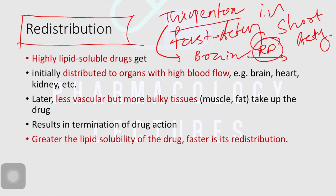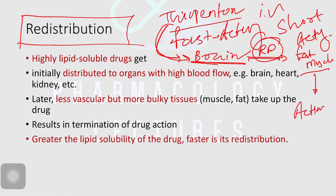It quickly gets redistributed to various tissues — tissues like fat cells and muscles. So it quickly moves from this highly perfused tissue into fat cells and muscle cells. Its action is in the brain, the highly perfused tissue, and once its action is achieved, it very quickly goes into the fat and muscle cells. So it is redistributed into fat and muscle cells, and the action gets terminated. The drug is still there in the body — in the fat and muscle cells — but the action is terminated.